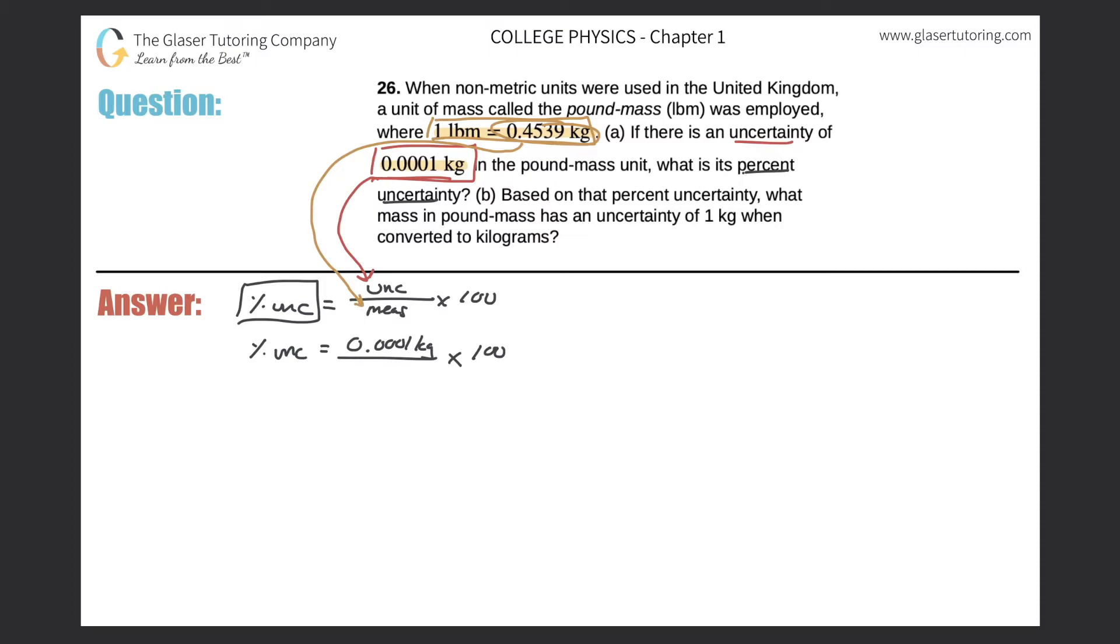So now let's do that. Let's plug in 0.4539 kilograms. Notice the kilograms will cancel, and that's what should happen because percents are unitless. So let's do the division now. 0.0001 divided by 0.4539. Multiply that by 100. So we get a value of approximately 0.02203. Now what we have to do is we're going to have to round this to one significant figure because of the one significant figure found in the numerator. So it's going to be 0.02%. So that's the percent uncertainty associated with this pound mass unit.